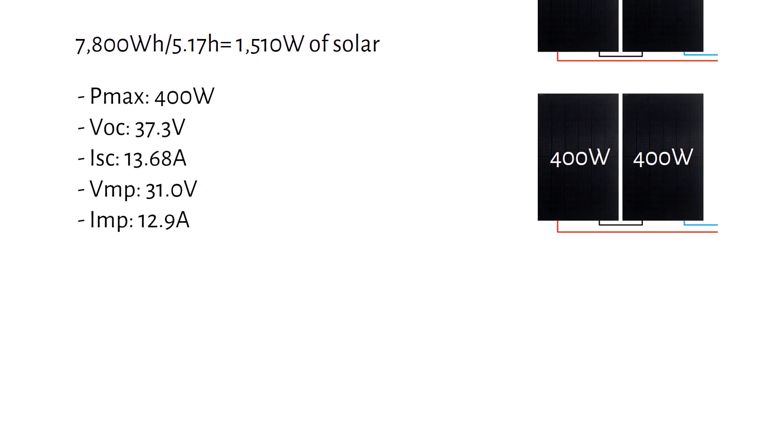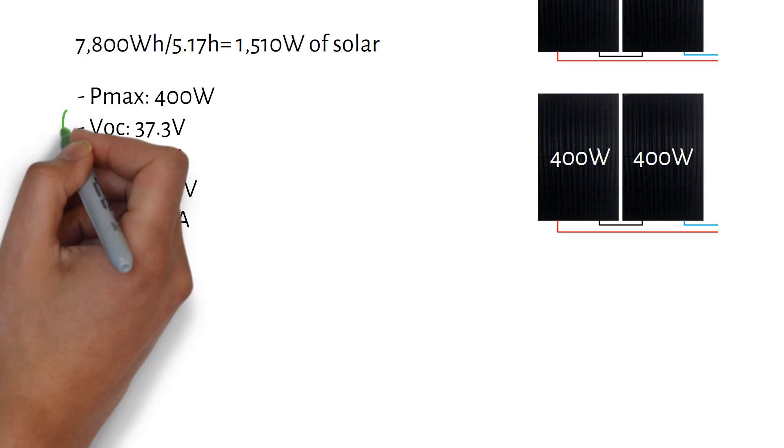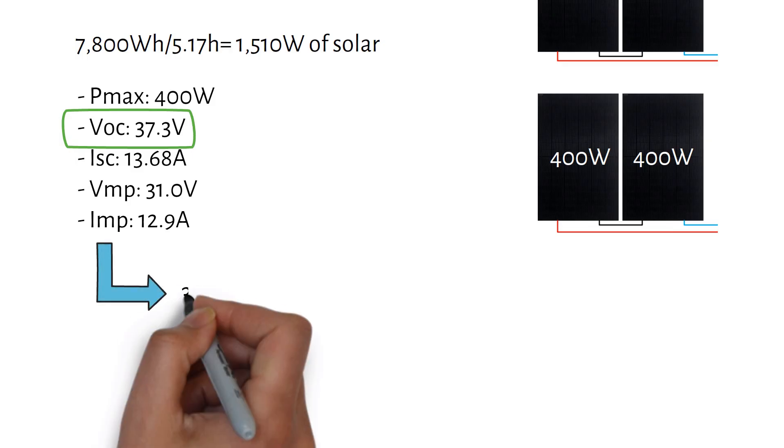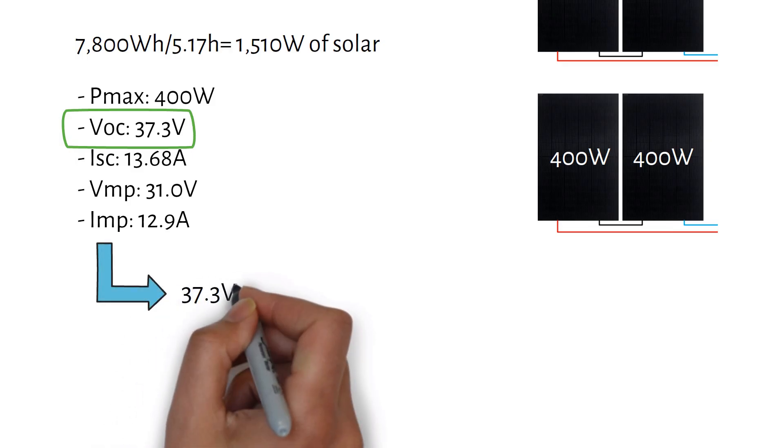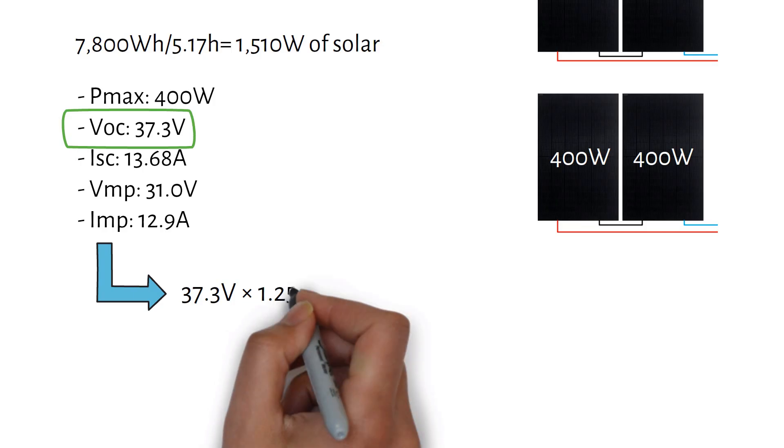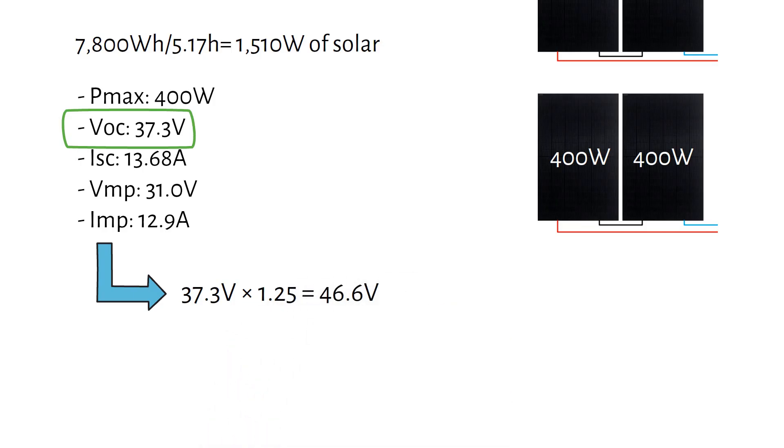A typical 400W panel might have specs like these. I need the VOC to size the charge controller and multiply it by 1.25 to get the maximum input voltage for cold conditions. And I get 46.6V.